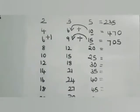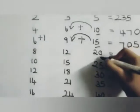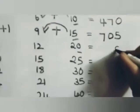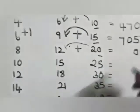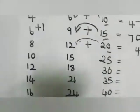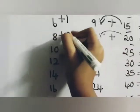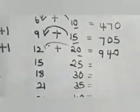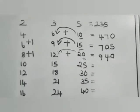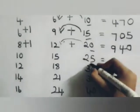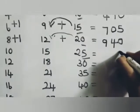Next: write zero here, add two to twelve — it will be fourteen, so write four here and carry one. Add it here so it will be nine hundred and forty. So 235 multiplied by four is 940. Next, write five as such here, add two to fifteen — it will be seventeen.